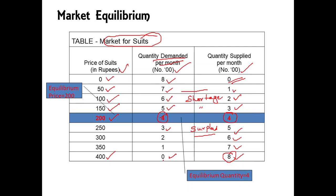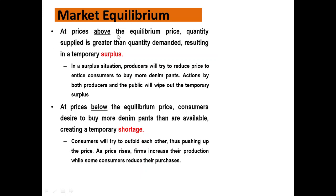With supply far exceeding demand and no sales, sellers cannot sell their stock. There will be overstock, production will reduce, and the market will find ways to restore equilibrium. Ultimately, market equilibrium is a situation when both demand and supply equalize. To note: if price is above the equilibrium price, there will be surplus; if the prevailing market price is below the equilibrium price, there will be shortage.